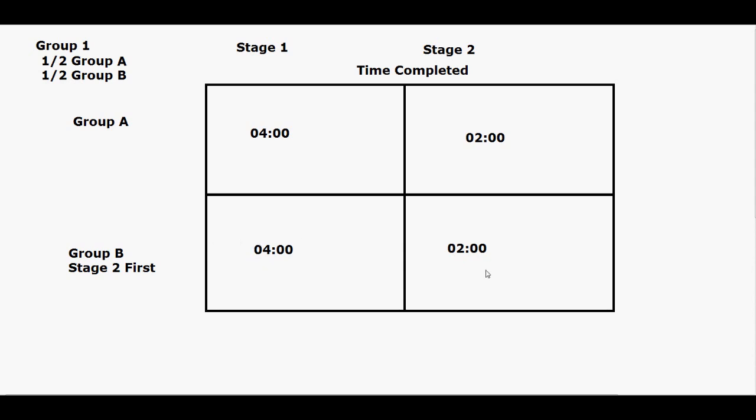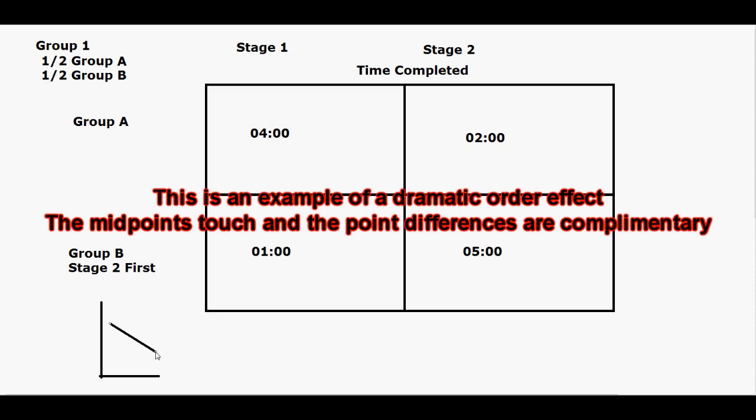Now the second outcome we can have is a symmetrical order effect. Now what happens here is we will see order effects, and so as they go through stage 2 first, so we'll just say that it took them five minutes over here, one minute over here. So if we were to graph this, it looks something like this. So here's group A, they started off at 4, they went down to 2. And here's group B, they went from 1, they went to 5.